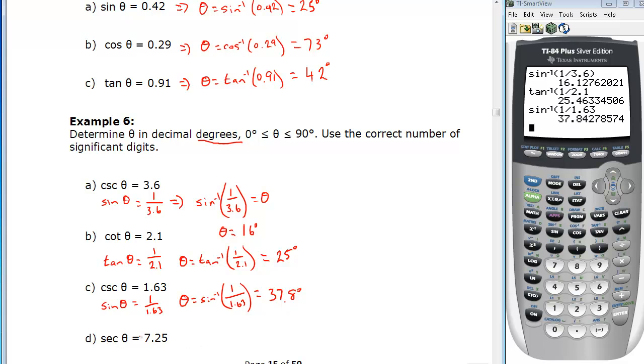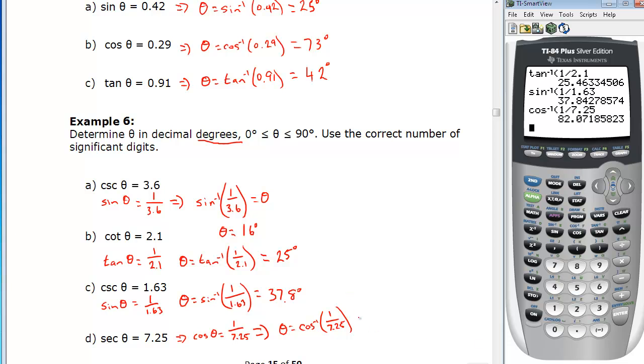Final example, secant. The reciprocal is going to give us cosine theta equal to the reciprocal of 7.25, which is 1 over 7.25. Theta then is the cosine inverse of 1 over 7.25. If we stick that one on the calculator, cosine inverse 1 over 7.25 gives us 82.1 degrees when rounded to three significant digits. That's the end of that page and practice with your calculator.